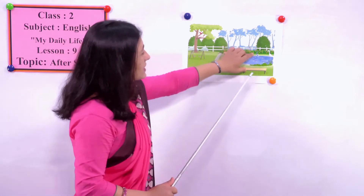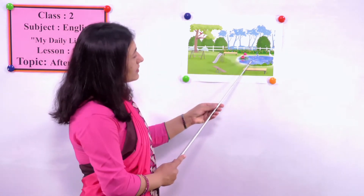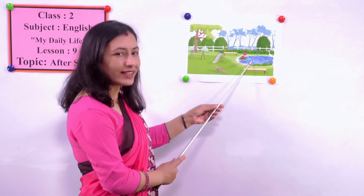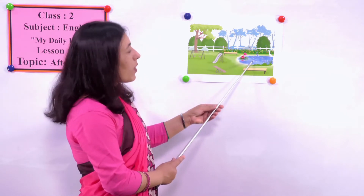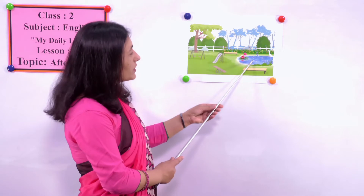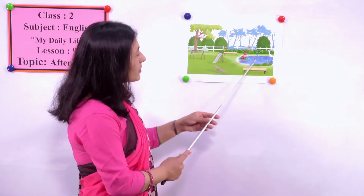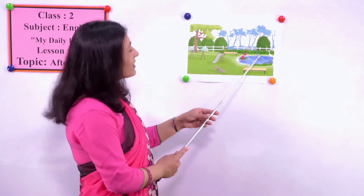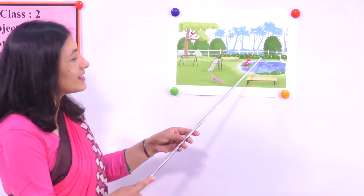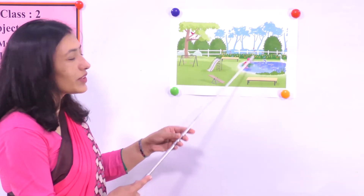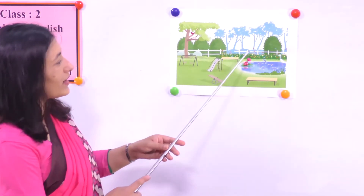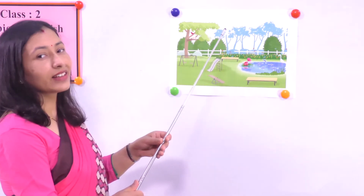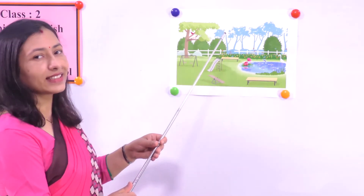So first tell me, what is it? You have already told. Good - pond. And what are there in the pond? Fishes. Yes, you can see fish. And what is it? It's a fence. Okay.